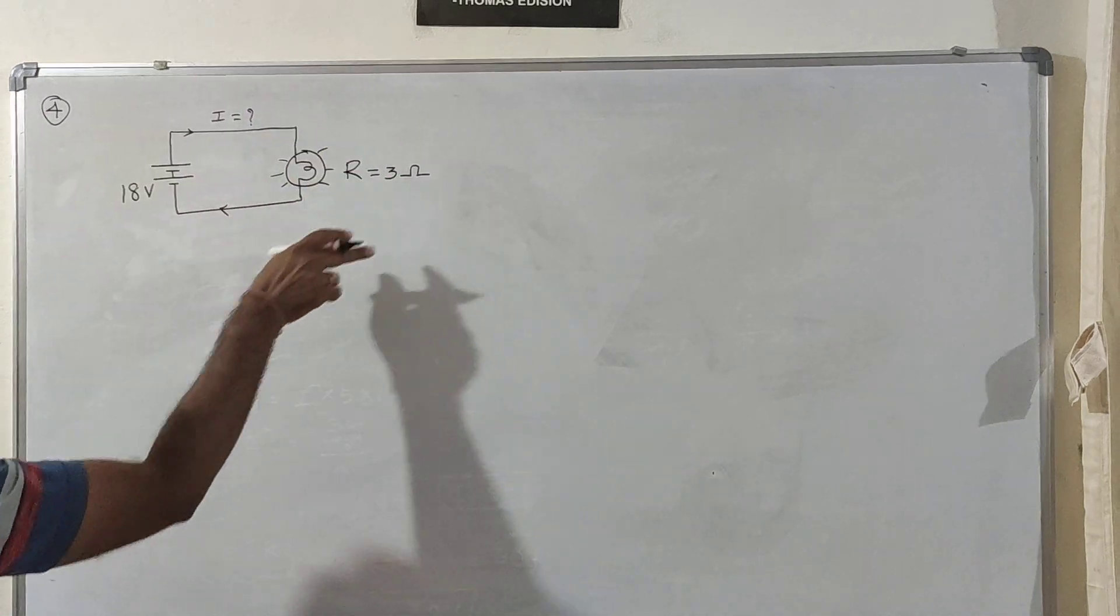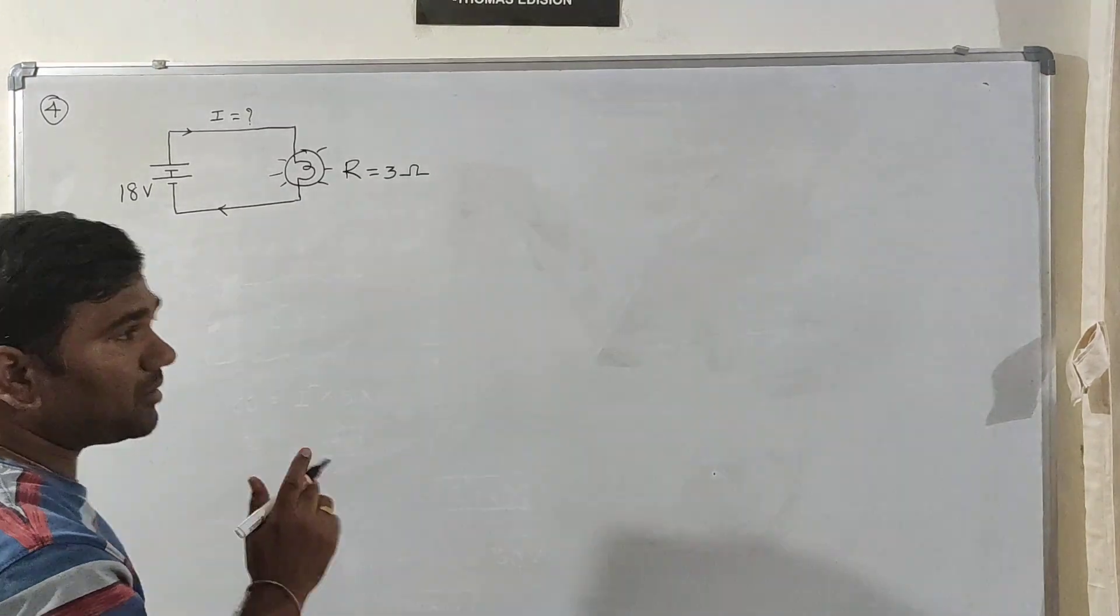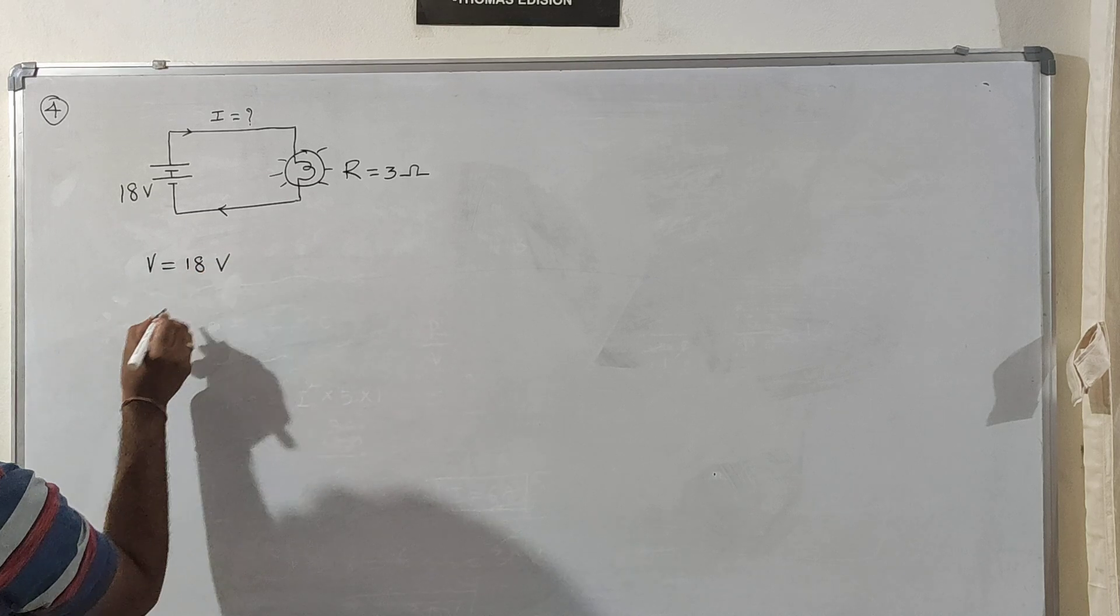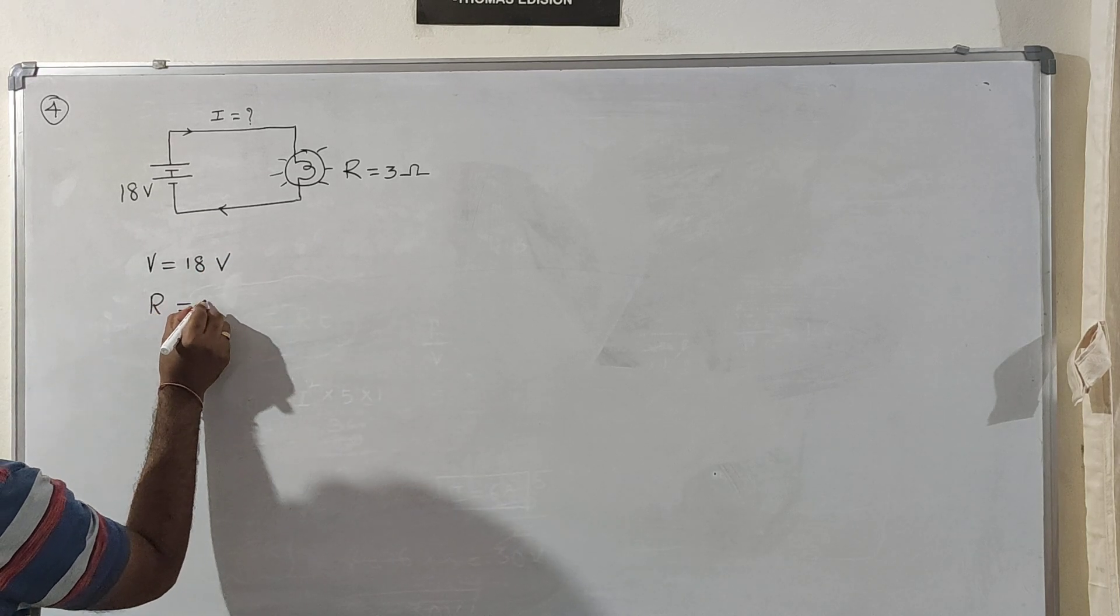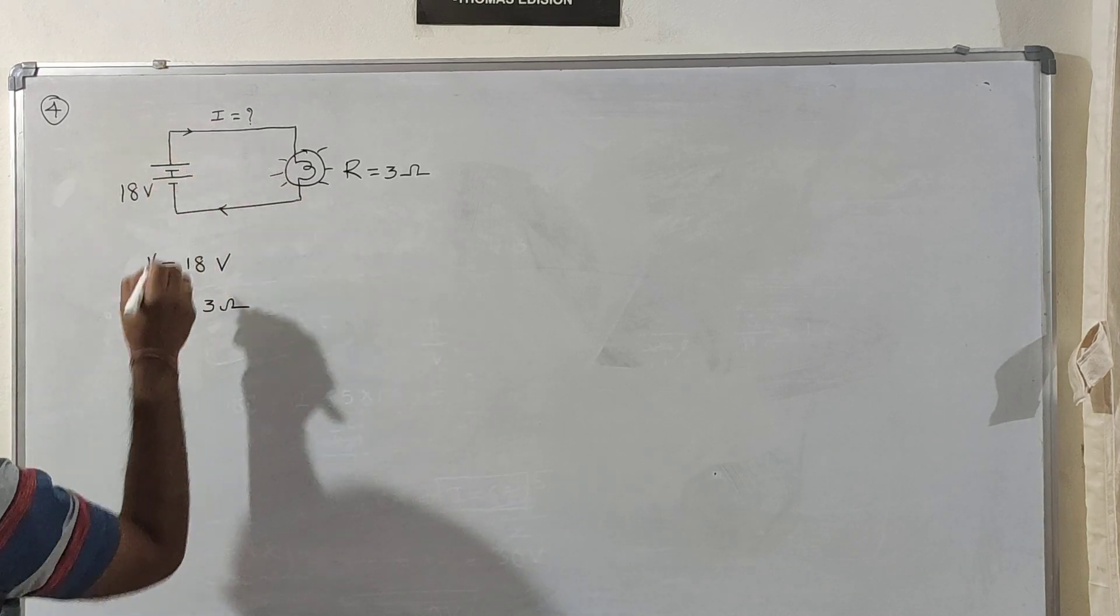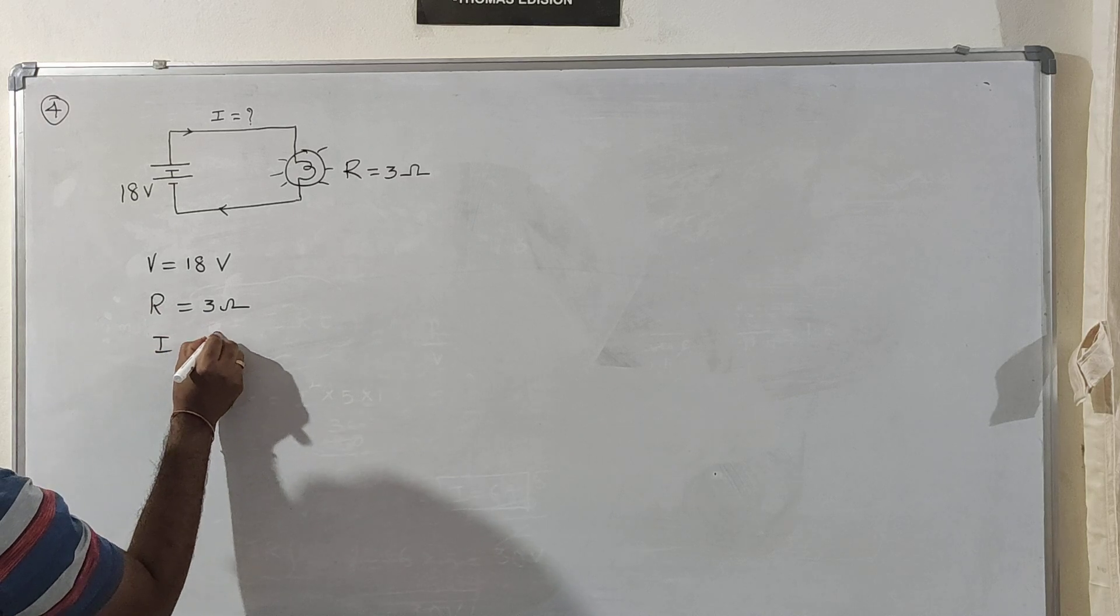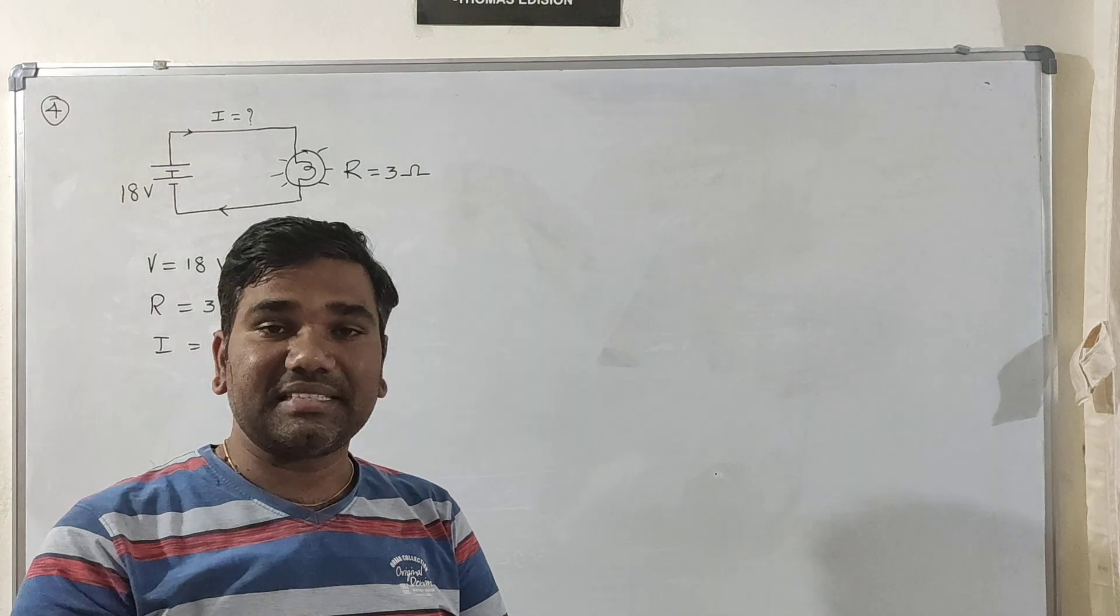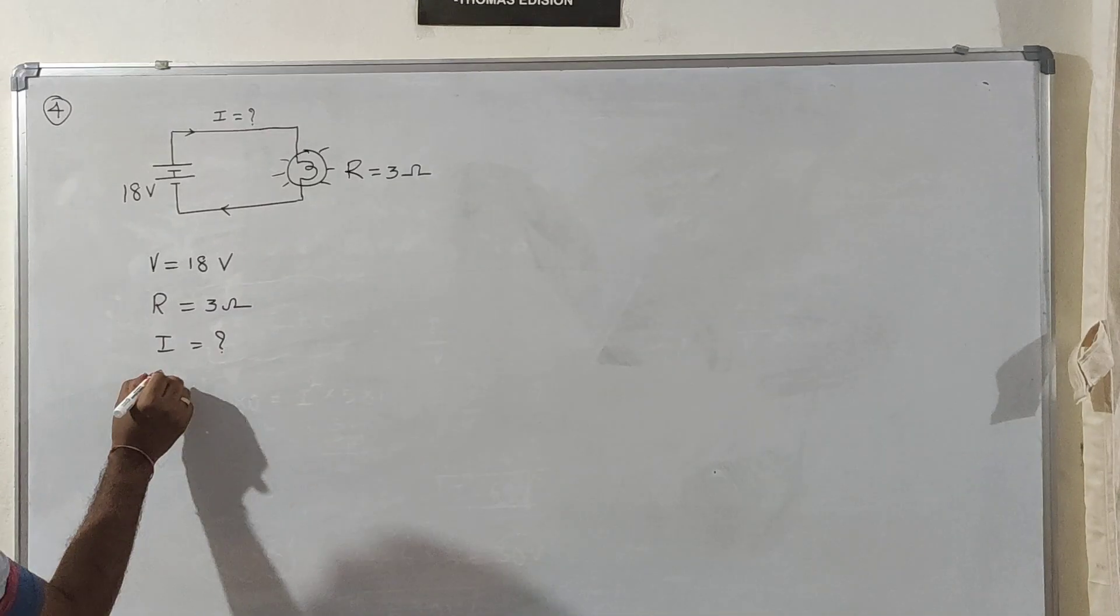If you observe the circuit, what are the given parameters? V is equal to 18 volts and R is equal to 3 ohms. We have to find the current I and power dissipated in the bulb.